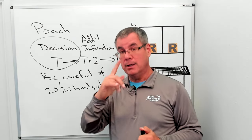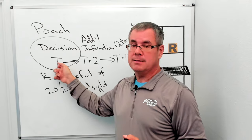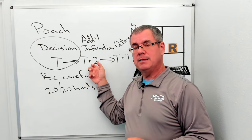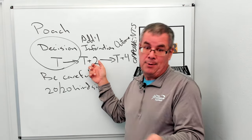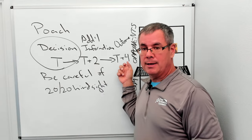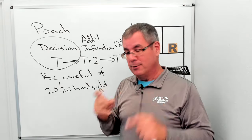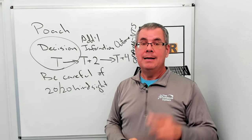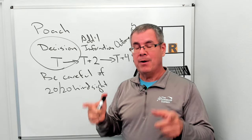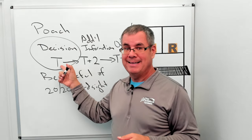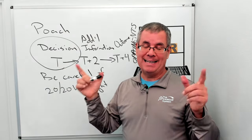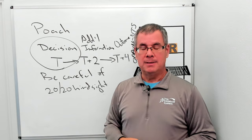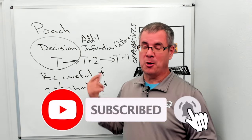There are all sorts of situations in pickleball where understanding a decision timeline — and knowing your decision will occur based on incomplete information, with additional information coming later, and an outcome at T plus four — is valuable. Be careful about using the outcome to second-guess your decision making. Second-guess only based on what was available to you at time T. That's how understanding the decision-making timeline will help you improve your play.